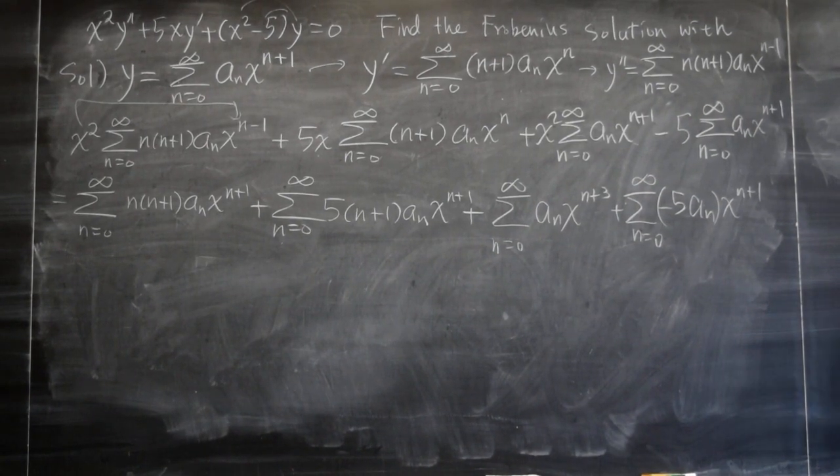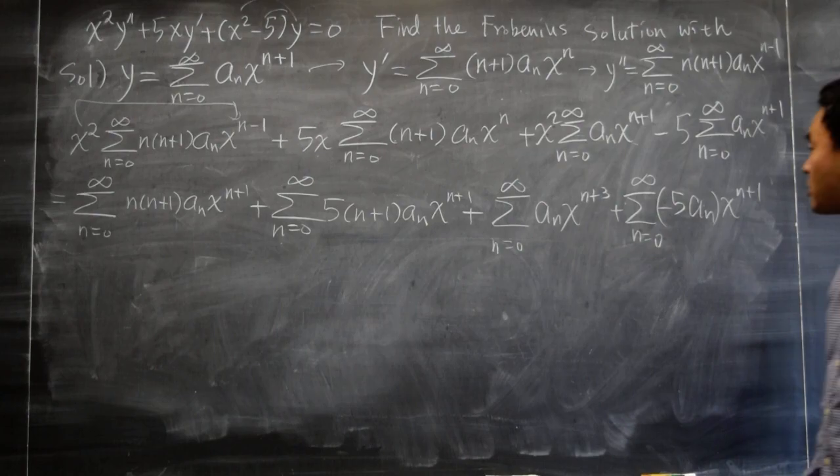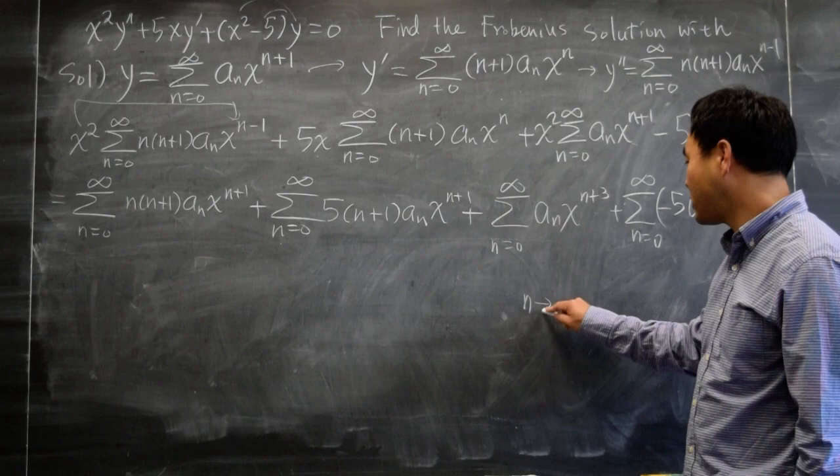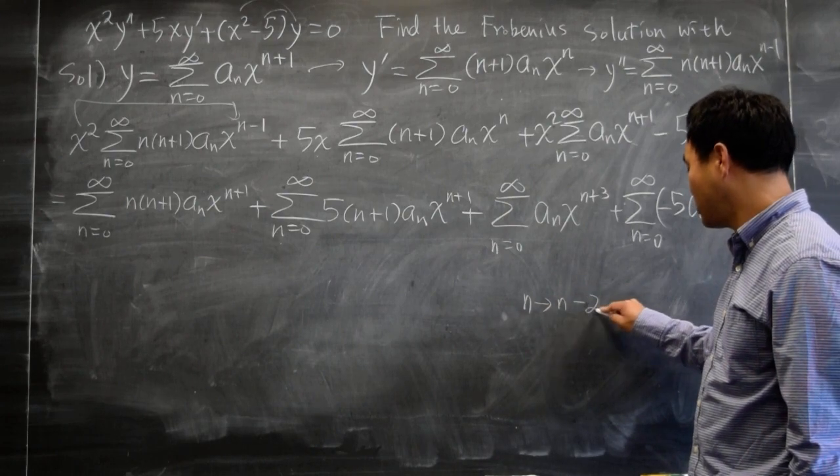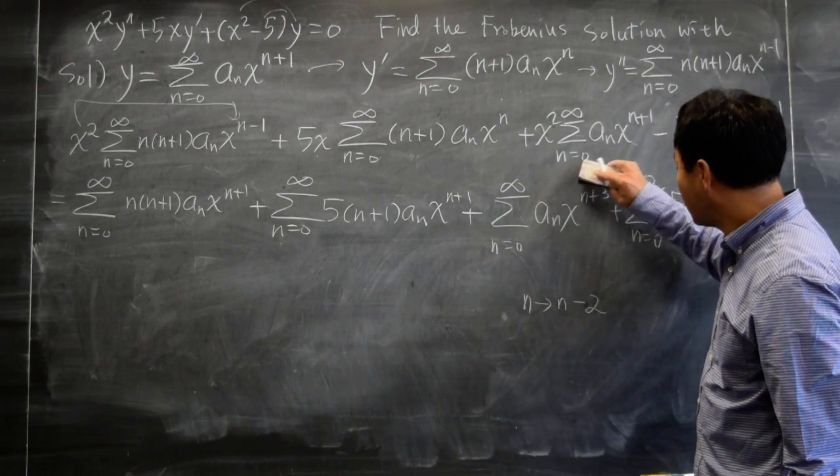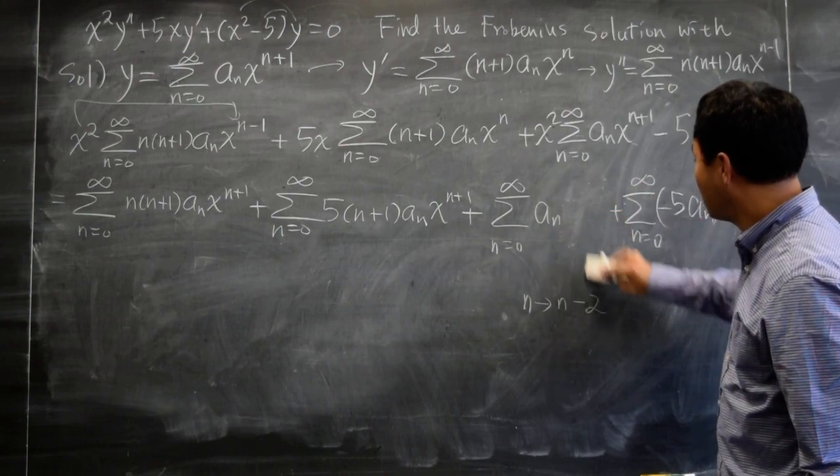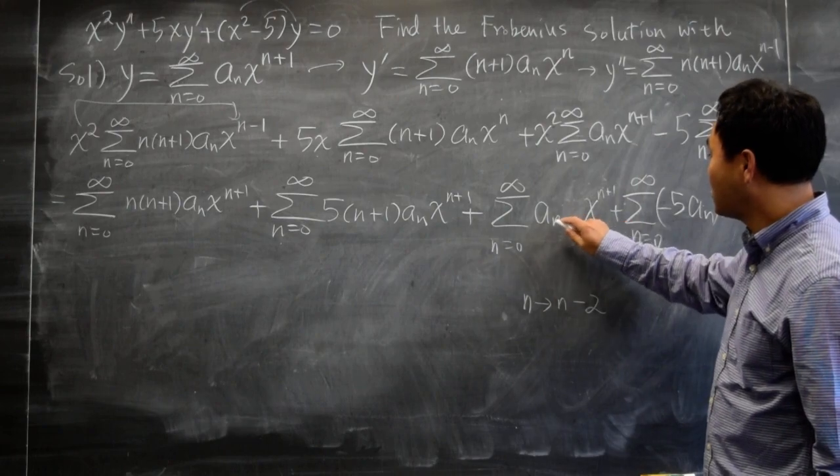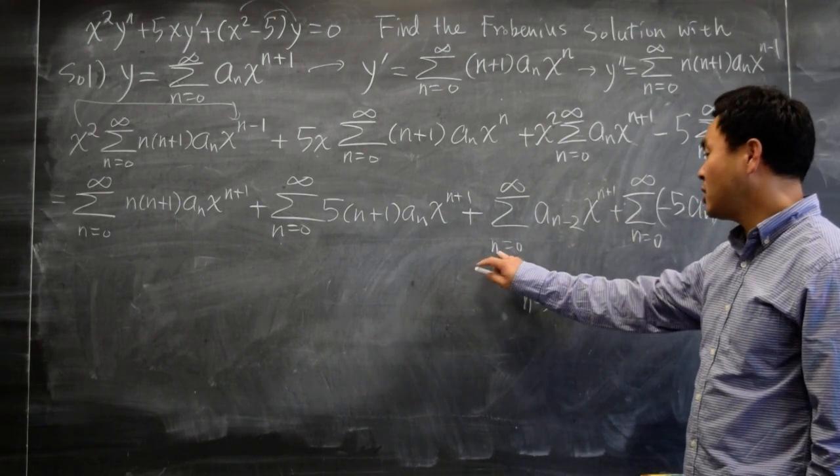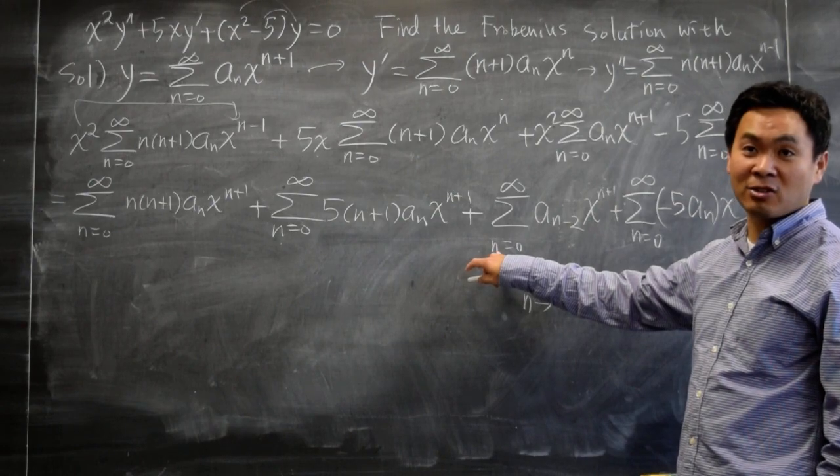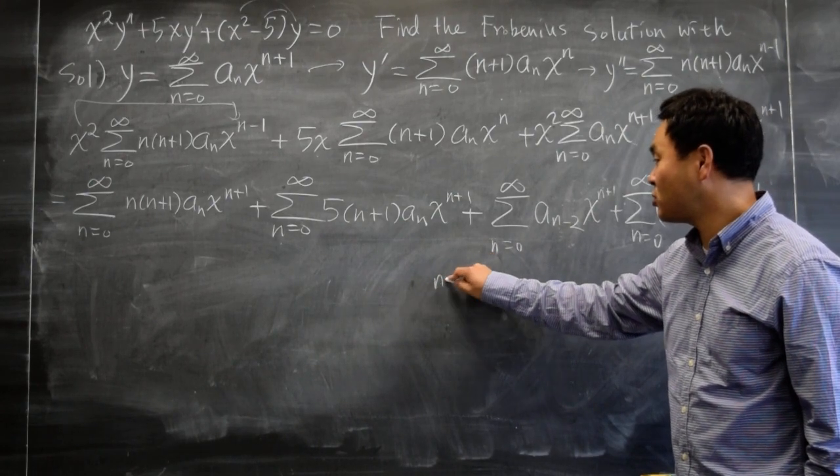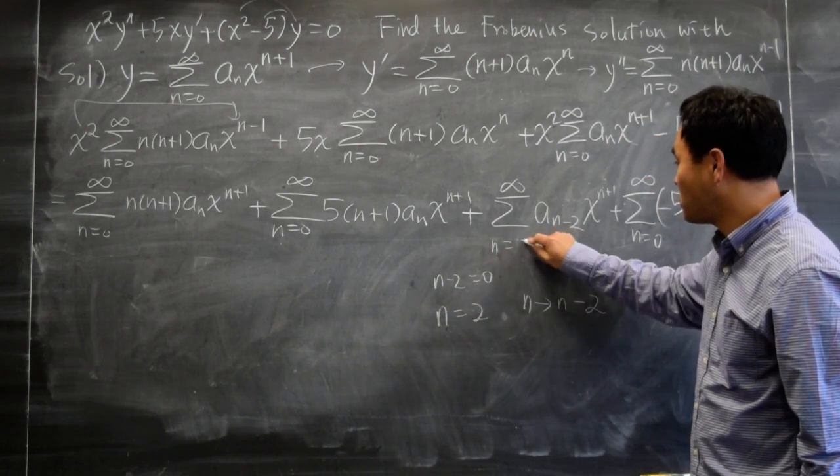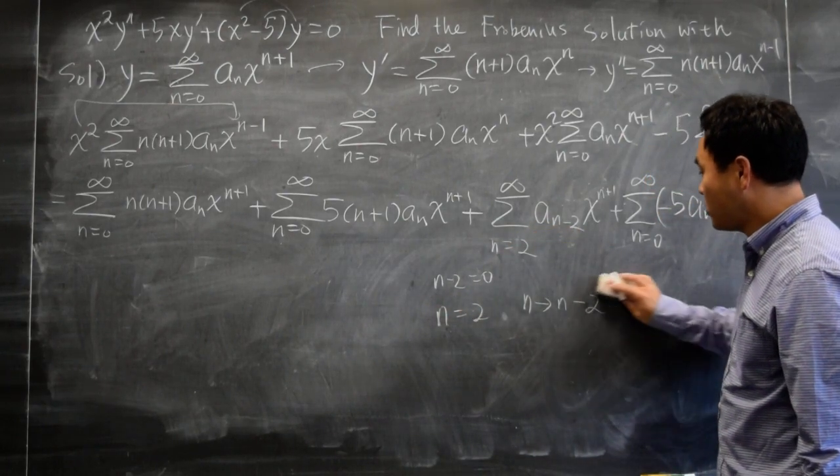The third one. I need to replace n by what? n minus 2. n should be replaced by n minus 2. And if you do that this will turn into x to the n plus 1 just like everything else. This n has to be replaced by n minus 2. And if you set this n by n minus 2 you get the equation n minus 2 equals to 0. Solving this one for n you get 2. So this should be replaced by 2. So we did the shifting.